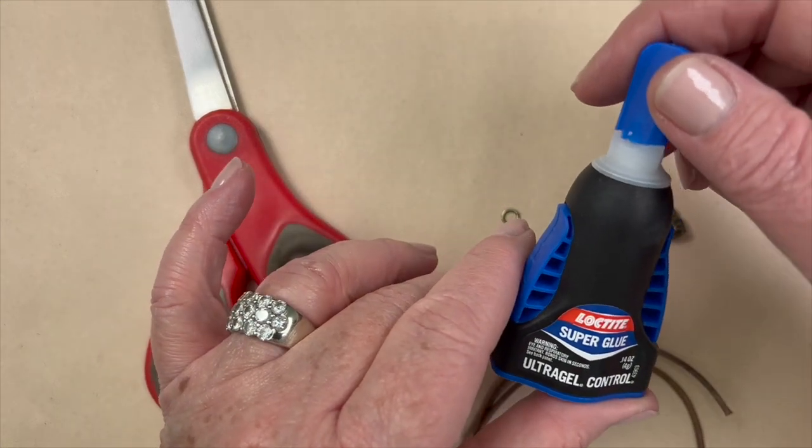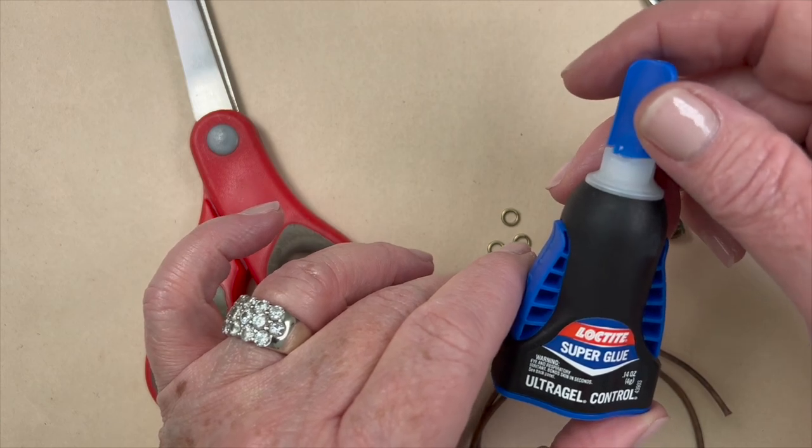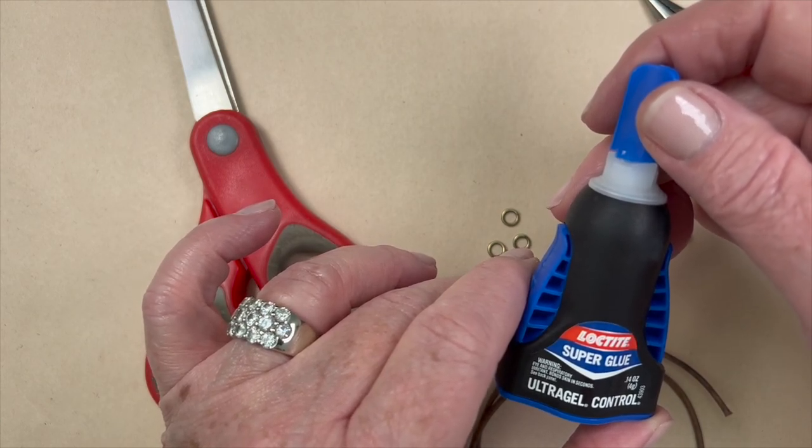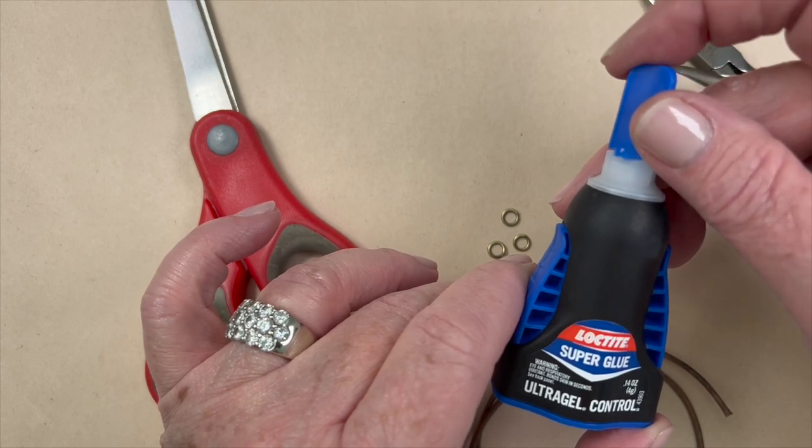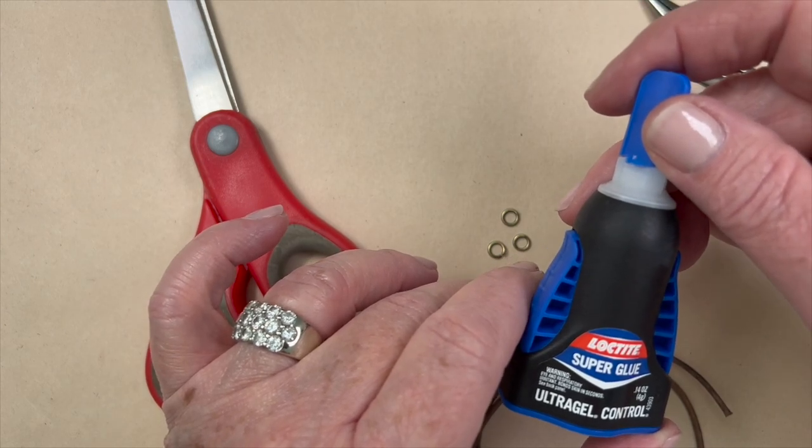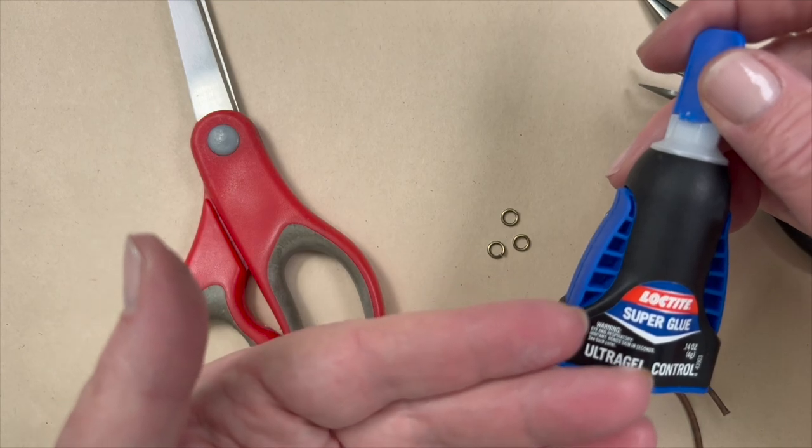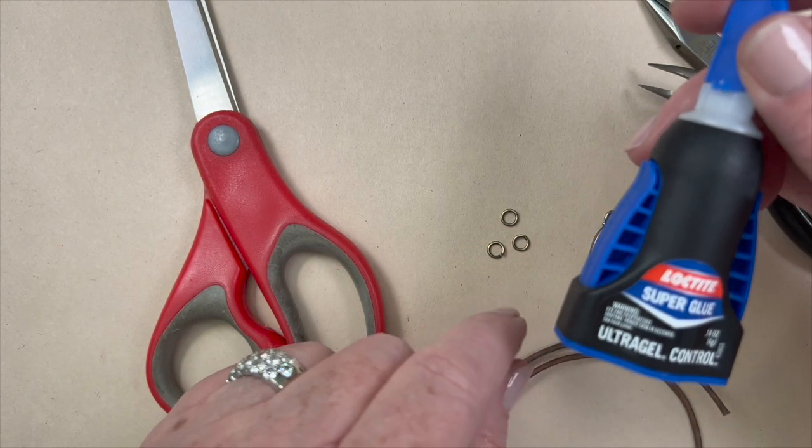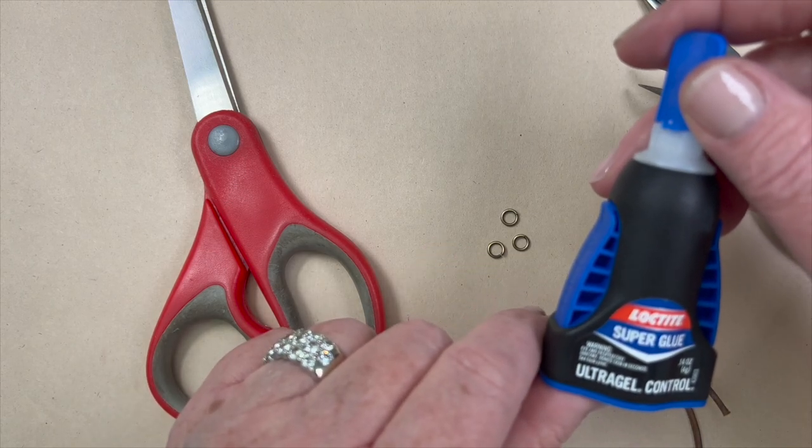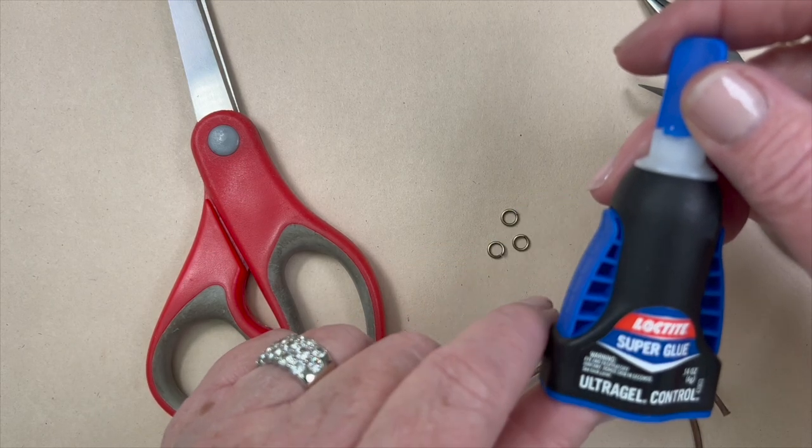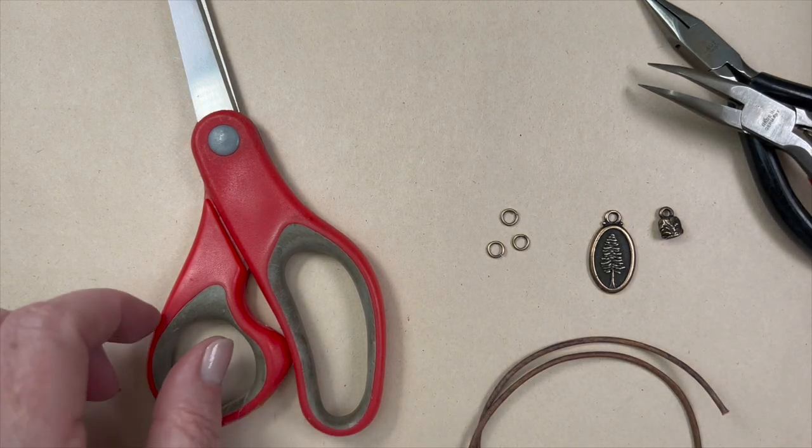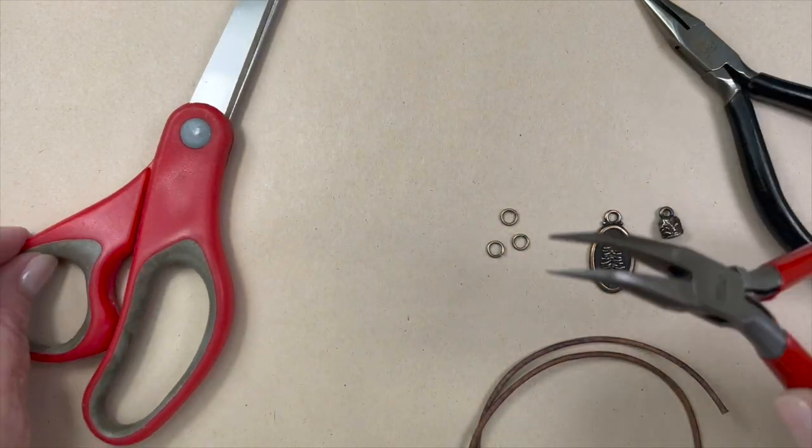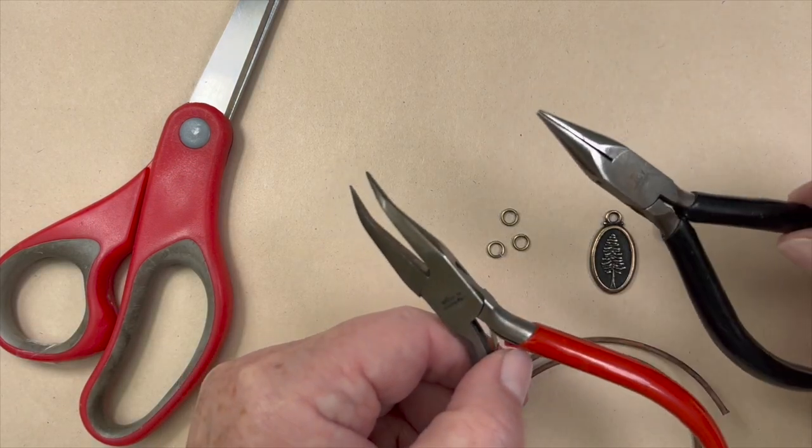We're going to be using some Loctite super glue. You could also use E6000 or GS Hypo or super new glue, whatever glue you have kicking around. I really like this one on leather. You do have to be careful though—you will see it on my fingers here. I was getting some of it stuck on when I was making this piece originally and it's really hard to get off, but it's a really great product. As far as tools, we're going to be needing a pair of scissors, a pair of bent chain nose pliers, and a pair of round nose pliers.